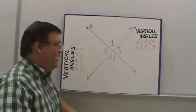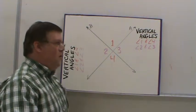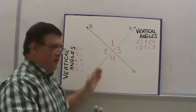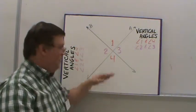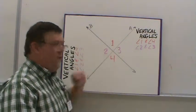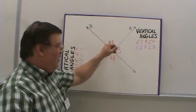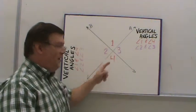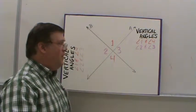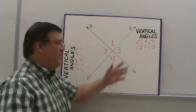We're going to step back a bit and look at vertical angles. Whenever you have two straight lines crossing, they're going to form four angles, and angles that are opposite of each other form vertical angle pairs.